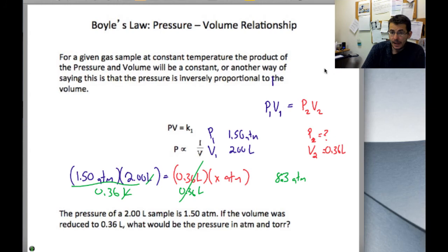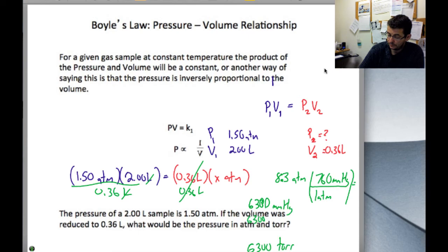Pressure goes down, volume goes up. Volume goes down, pressure goes up. Now, this question also asks us about Torr. Well, from our definition, we know that 1 atm is equal to 760 millimeters of mercury or Torr. And so, in this case, it's quite trivial. There are 6,330 or 6,300 in sig figs Torr.